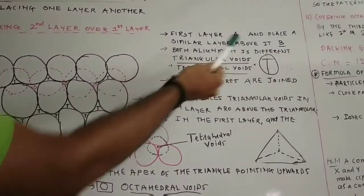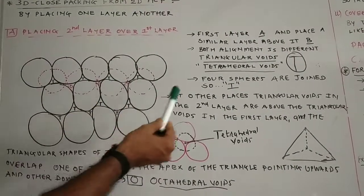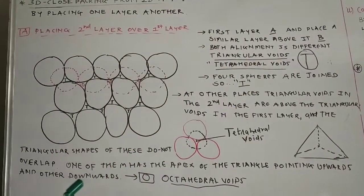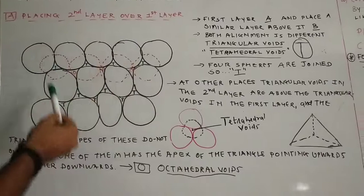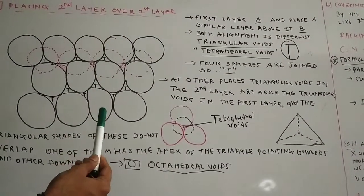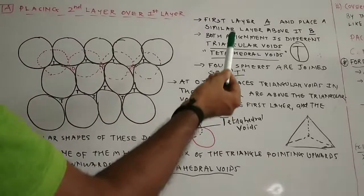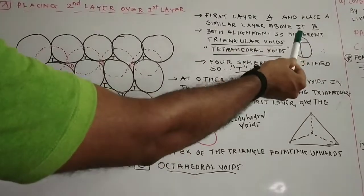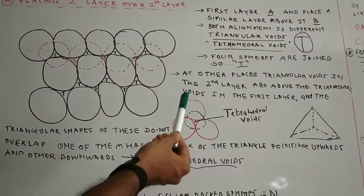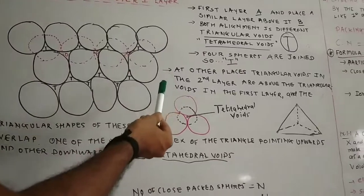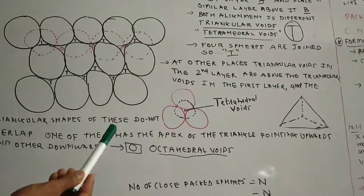Now first of all, layer A, if you will see in the diagram, the pattern we have to do in the same manner. The second layer we have to place just above it. If you will see in this diagram, both the layers are not having the same kind of pattern. So we cannot call the second layer A; we have to give it a different name, that is B. So the pattern over here would be A, B, A, B, A, B type. Both layers have different alignment.